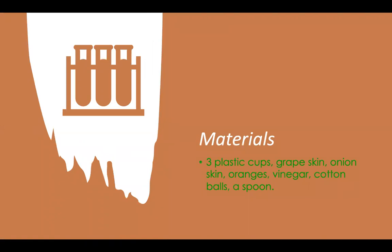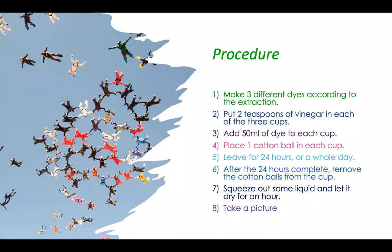Here are the materials that I used for the experiment. Here's my procedure. First, I made three different dyes according to the extraction. Then I put two teaspoons of vinegar in each of the three cups. I added 50 milliliters of dye to each cup. I placed one cotton ball in each cup. I left it for 24 hours inside the cup. Then after the 24 hours completed, I removed the cotton balls from the cup. I squeezed out some liquid and let it dry for an hour and then took some pictures to analyze it.